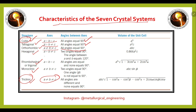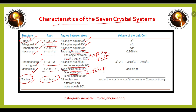For hexagonal, a = b ≠ c, with two angles equal to 90° and the angle between a and b equal to 120° (i.e., α = β = 90°, γ = 120°). For rhombohedral, all angles are equal and none equals 90°, and a = b = c. For monoclinic, a ≠ b ≠ c, with two angles equal to 90° and one angle not equal to 90° (α = γ = 90°, β ≠ 90°).